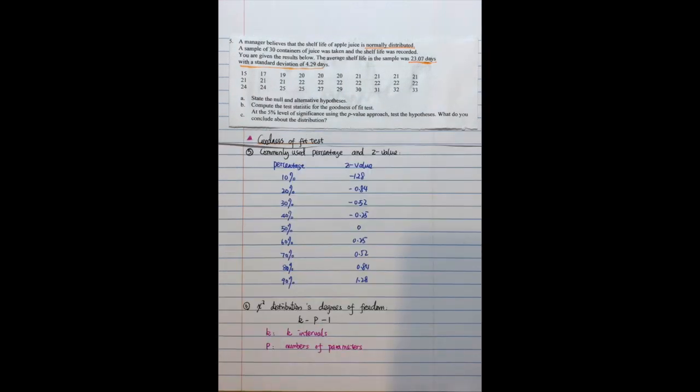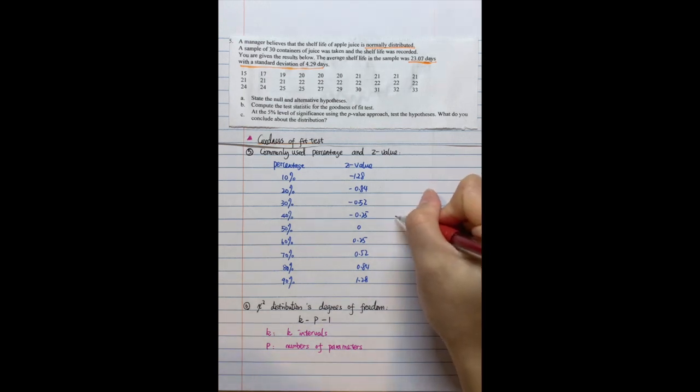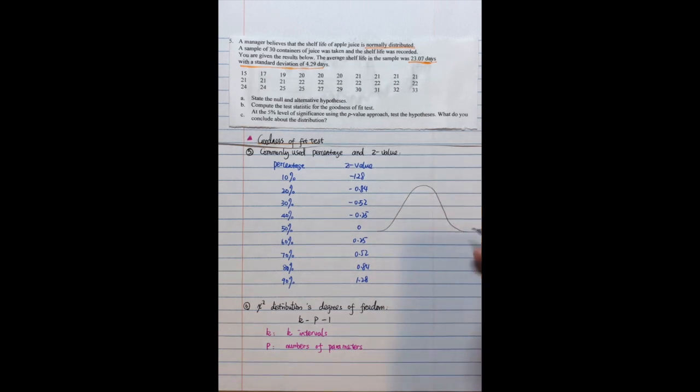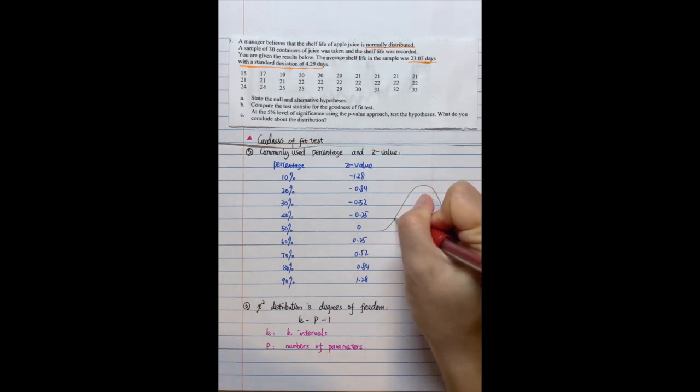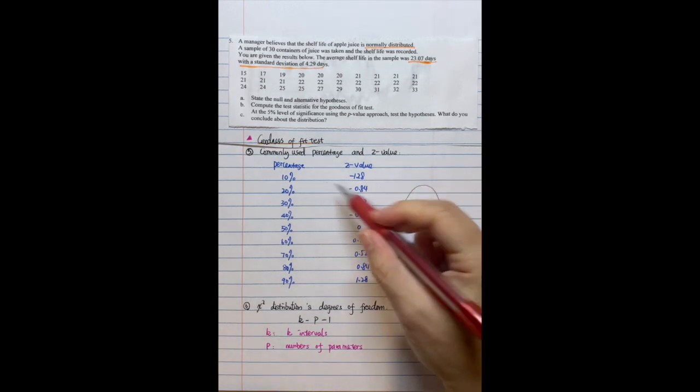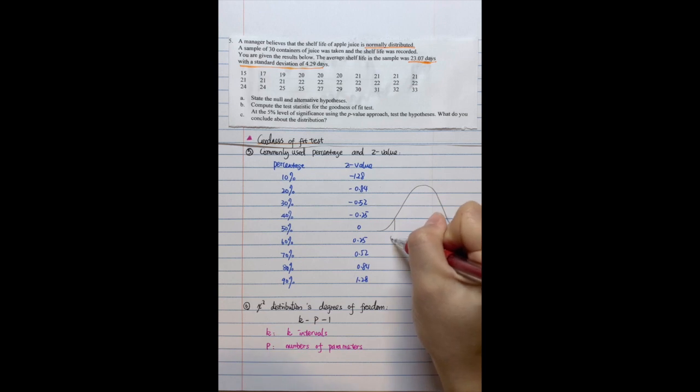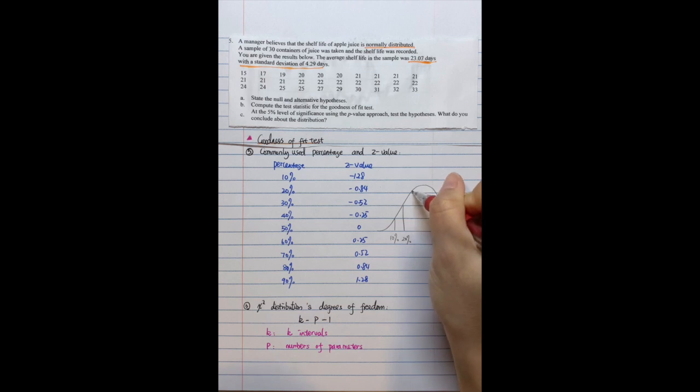So as we just mentioned, that normal distribution is a continuous distribution. So we need to modify this continuous variables into categorical variables. So how can we do that? Generally, we would like to use some common percentage, like 10%, 20%, something like that. Maybe this is 30%, et cetera.